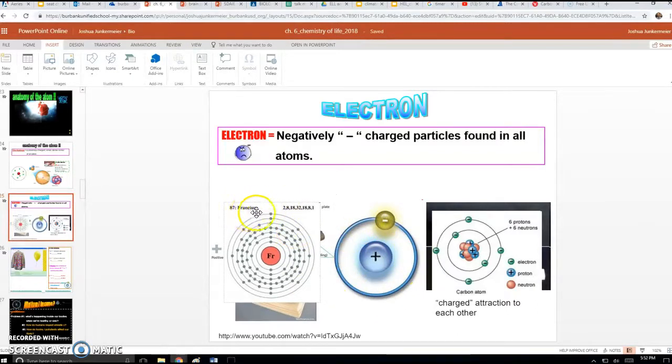This is the element francium. And francium contains 87 electrons. And 87 electrons are buzzing around the outside of an atom. And then we have here, this is, let's see,